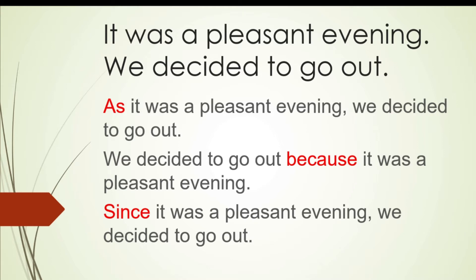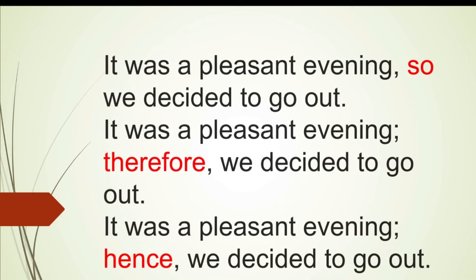An as clause or a since clause always goes at the beginning of the sentence, but that is not the case with the because clause — it can go before or after the main clause. Remember this: the as clause and since clause should always go at the beginning of the sentence, and in that case we put a comma after the as clause or since clause. A because clause can go before or after the main clause. We can also express the same idea using so: 'It was a pleasant evening, so we decided to go out.'